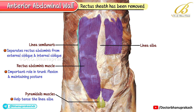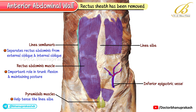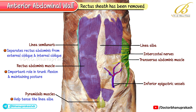On the left side of the image, the rectus abdominis muscle has been partially removed. This allows us to see the posterior wall of the rectus sheath, along with the course of the inferior epigastric vessels, which are clinically important in abdominal surgery. Finally, notice that laterally on the left side, a portion of the transversus abdominis muscle is visible, along with the intercostal nerve supplying the abdominal wall.